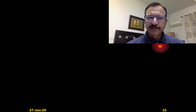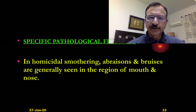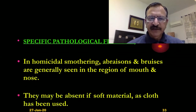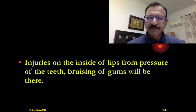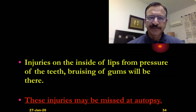The autopsy findings — the specific autopsy findings in homicidal smothering: abrasion and bruises are generally seen in the region of the mouth and nose. They may be absent if soft material or soft cloth is used. Injuries will be on the inside of the lips from pressure of the teeth, and bruising of the gums will be present. The pressure from outside on the lips against the gums will produce injuries on the inside of the lips. These injuries may routinely be missed at autopsy, so a careful internal examination of the mouth should be routine.